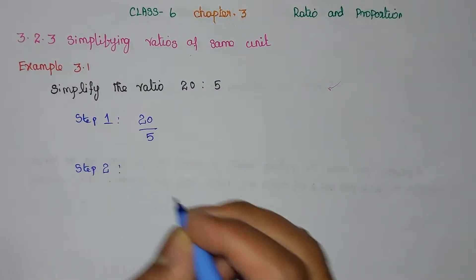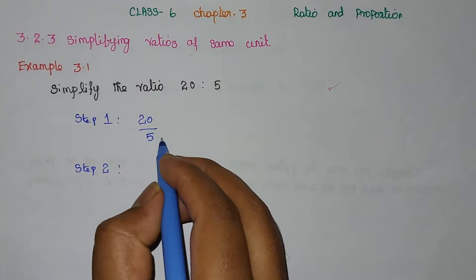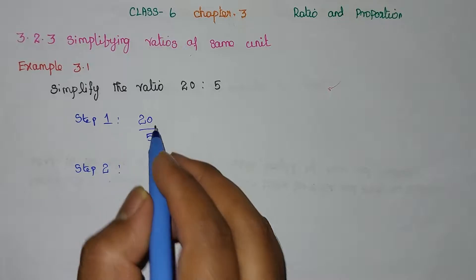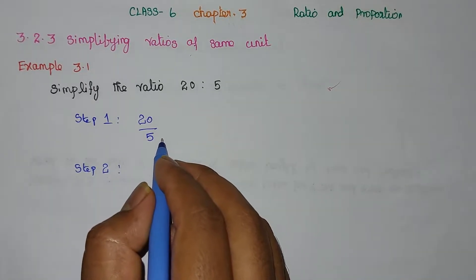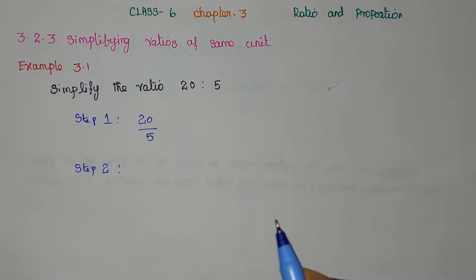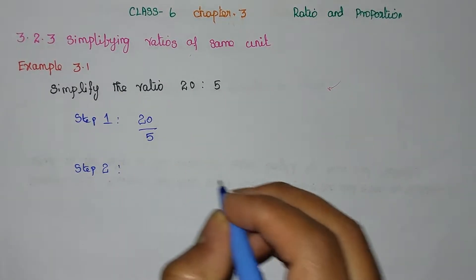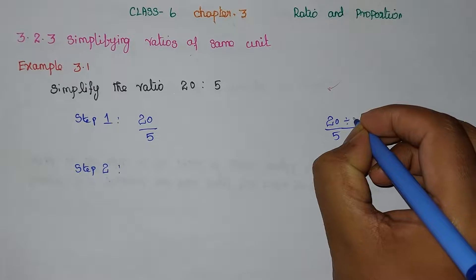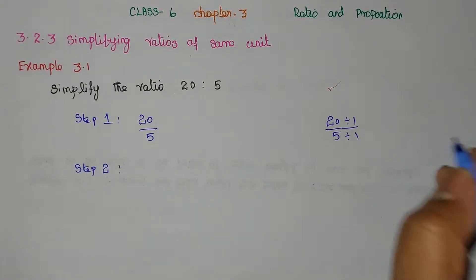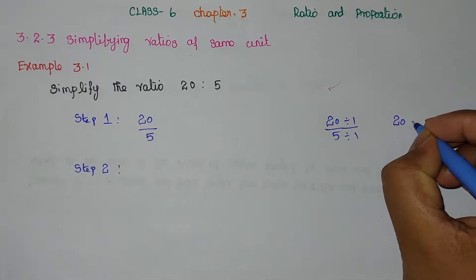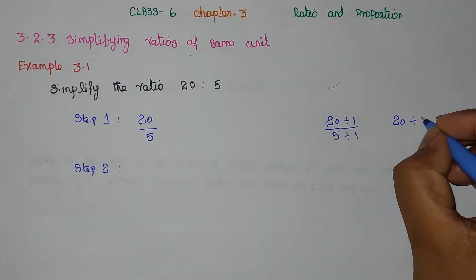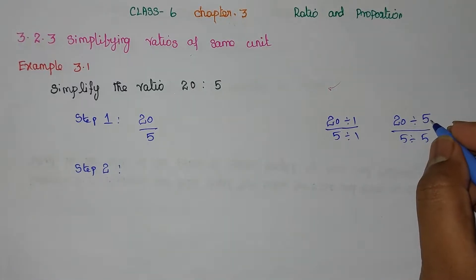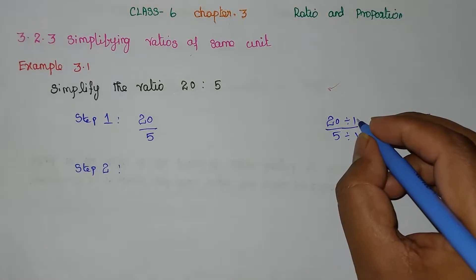Step 2: this fraction will be simplified. If you multiply one number, the denominator will be multiplied by the numerator. The same way, divide by the numerator. So we divide: 20 divided by 5, and 5 divided by 5. Now, 5 divided by 5 is equal to 1.